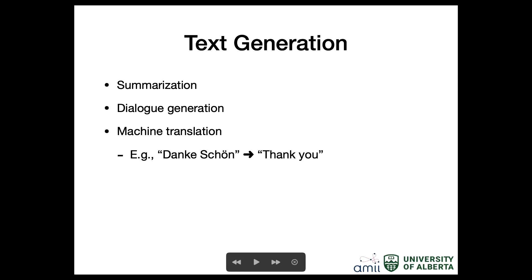Text generation is well known, especially with the help of ChatGPT — you type something and the system generates text. It has wide applications, for example summarization or machine translation. If you go to a foreign country and don't know the language, you feed into a system and it generates a language you know. For example, if you feed in a German phrase, the meaning might just be 'thank you,' and if the system can generate 'thank you,' then you know what it means.